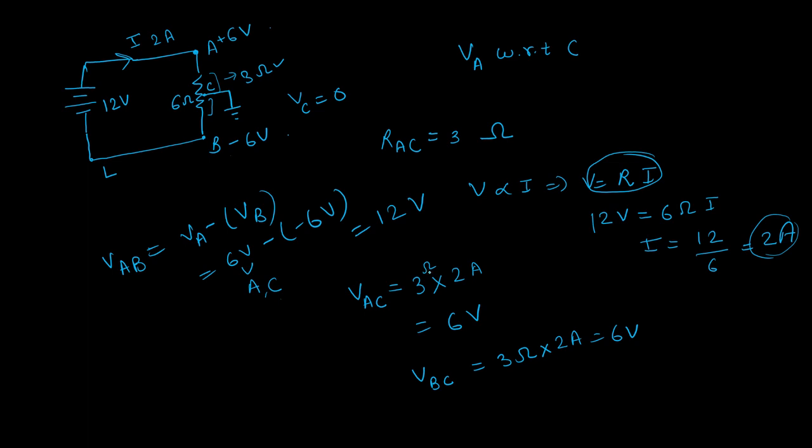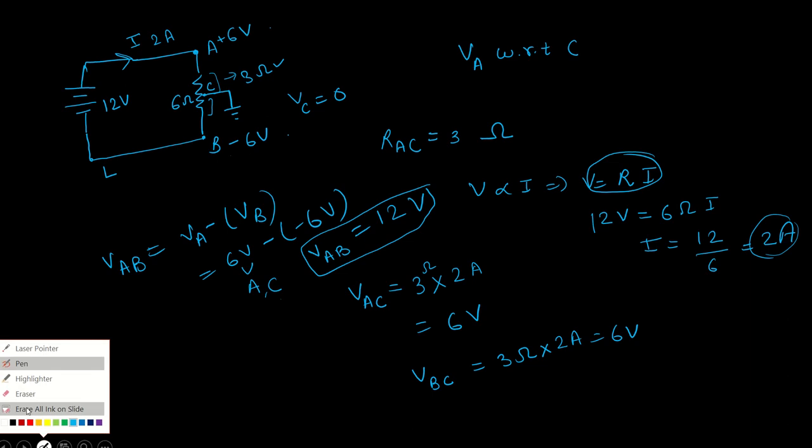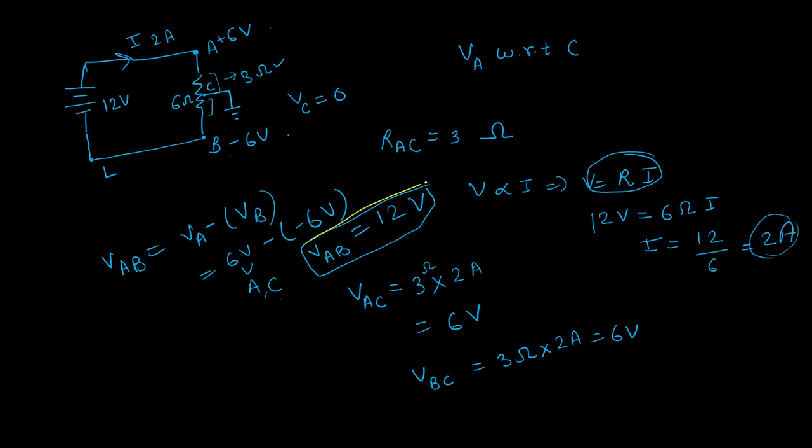The next question was the potential difference between A and B, which is VAB is equal to how much? 12 volts. So it has to be 12 volts and it has come as 12 volts. After that, he asked what is the current flowing through the portion CB? I, C, B. How will you tell us? Look at this formula. I is equal to V by R.